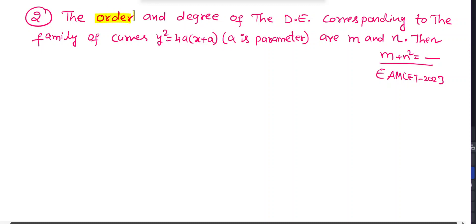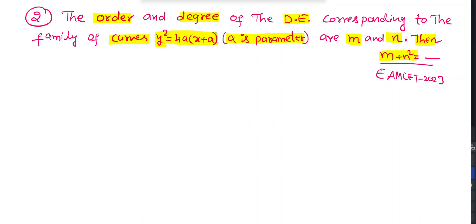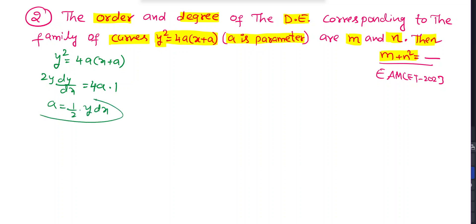This is the second question. The order and degree of the differential equation corresponding to the family of curves y² = 4a(x + a), where a is a parameter. If order is m and degree is n, find m + n². The given equation is y² = 4a(x + a). Take differentiation on both sides with respect to x: 2y·(dy/dx) = 4a·1, so a = (1/2)·y·(dy/dx).